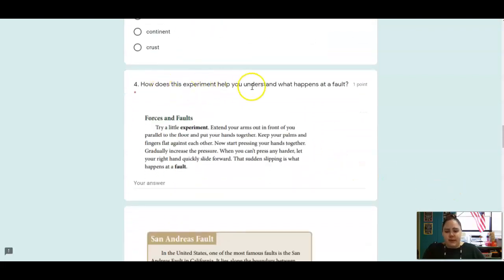How does this experiment help you understand what happens at a fault? It says try a little experiment. Extend your arms out in front of you and put your hands together. Keep your palms and fingers flat against each other and press your hands together. Gradually increase the pressure. When you can't press any harder, let your right hand slide forward and that sudden slipping is what happens at a fault. In your own words, how does that experiment help us understand what's happening at a fault?